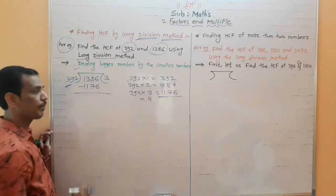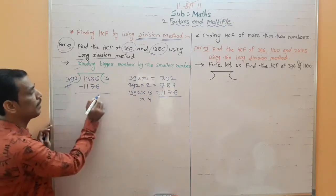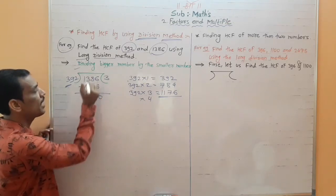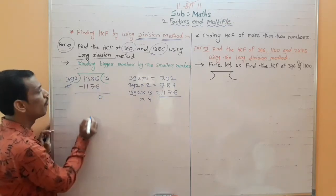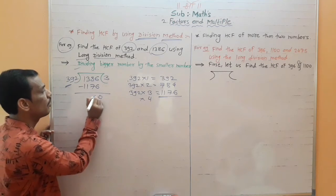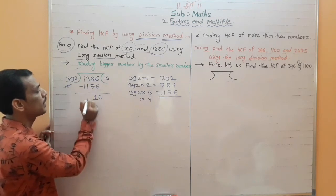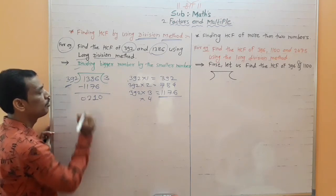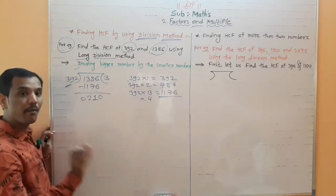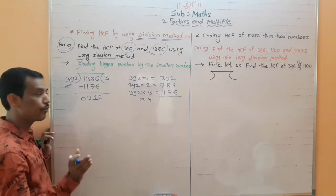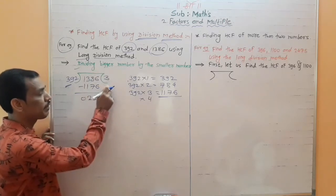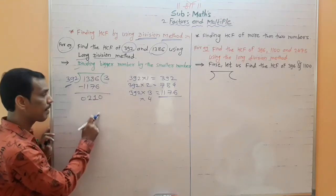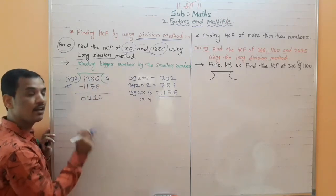We need to do the subtraction. 6 minus 6 is 0, 8 minus 7 gives 1, 3 minus 1 is 2, 1 minus 1 is 0. Now in step 2 we get the remainder 210.